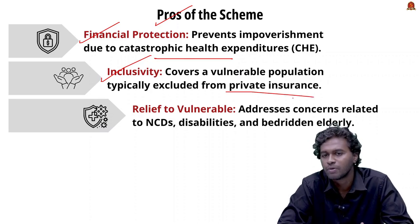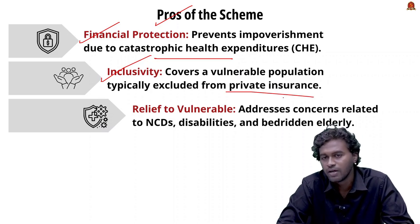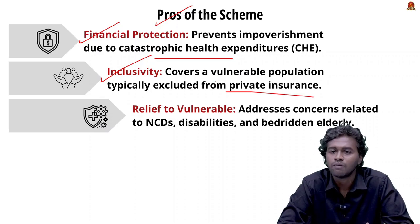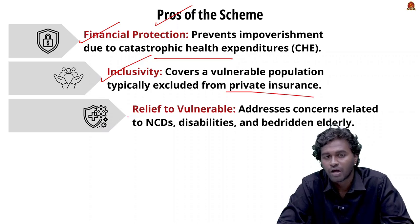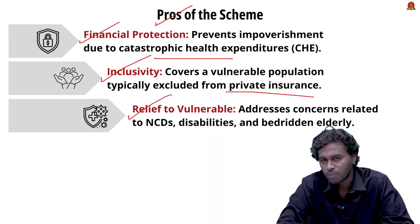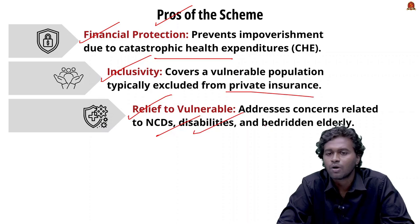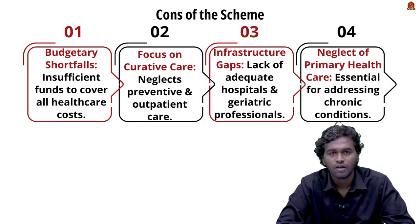Private insurance companies may not provide insurance beyond a certain age, so by expanding the policy, the population above 70 is now covered, ensuring their welfare. The third major benefit is relief to vulnerable populations — PM-JAY addresses concerns related to non-communicable diseases, disabilities, and the rising number of bed-ridden elderly people.